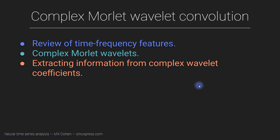You are now ready to learn about complex Morley wavelet convolution. You will see that it's essentially just a combination of things that you've already learned about — Morley wavelets, convolution, complex values, and extracting information from complex wavelet coefficients is essentially the same thing as what you learned with extracting information from Fourier coefficients.